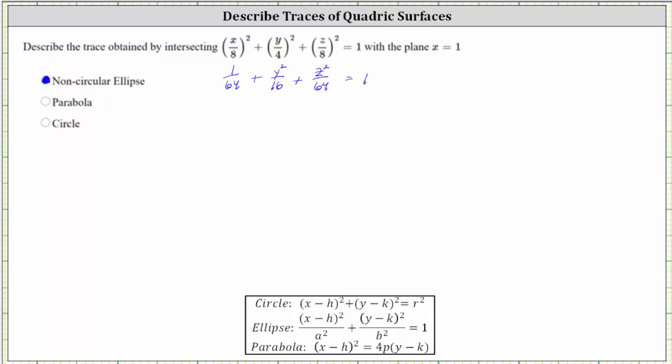Now let's isolate the variable terms by subtracting 1/64 on both sides, which gives us y squared divided by 16 plus z squared divided by 64 equals one minus 1/64, which is 63/64.